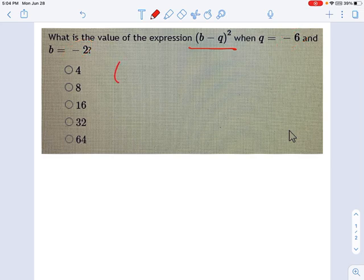b minus q, well, that's just negative 2 for b. And what's q? q is negative 6, so minus negative 6.